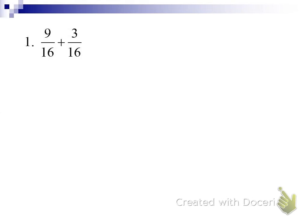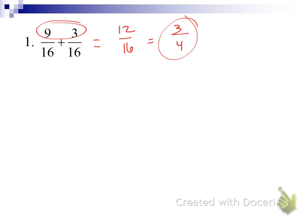For example, 9/16 plus 3/16 — those denominators are the same. When we add, we just add the numerators, so we get 12 over 16. Now that we've added, we can reduce: divide both 12 and 16 by 4 and get 3/4. The moral of the story is always check once you're done adding and subtracting to see if you can reduce — divide out common factors.